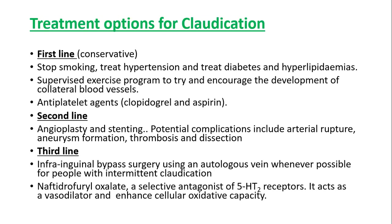Treatment options for claudication: the first line is to stop smoking, treat hypertension, treat diabetes, and treat hyperlipidemia. A supervised exercise program encourages development of collateral blood vessels. Antiplatelet agents such as clopidogrel and aspirin should be given. If these measures are insufficient, the second line is angioplasty and stenting, with potential complications of arterial rupture, aneurysm formation, further thrombosis, and dissection. Third line is infrainguinal bypass surgery using autologous veins whenever possible for severe intermittent claudication.